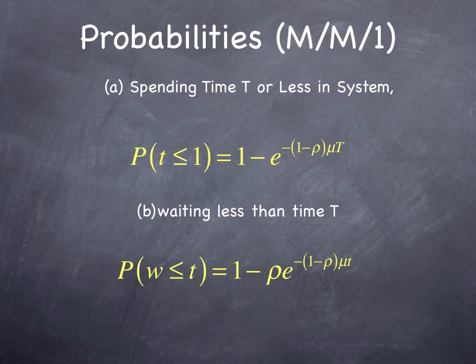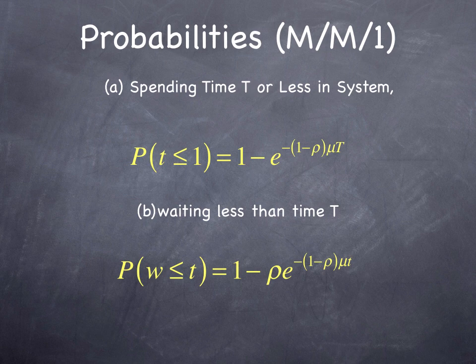We might want to know what's the likelihood that you're going to spend some amount of time in the system. What's the likelihood of spending time t or less in the system, or waiting less than time t?